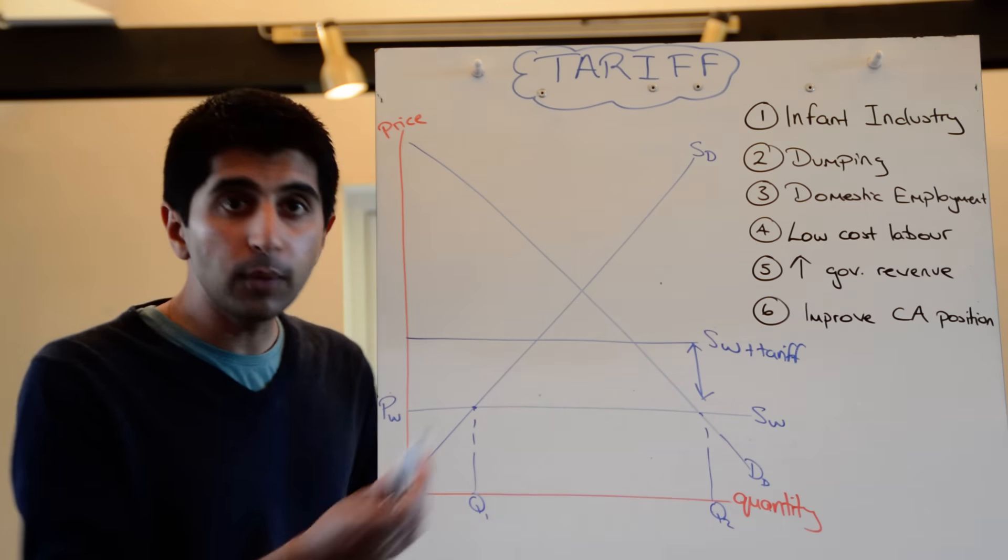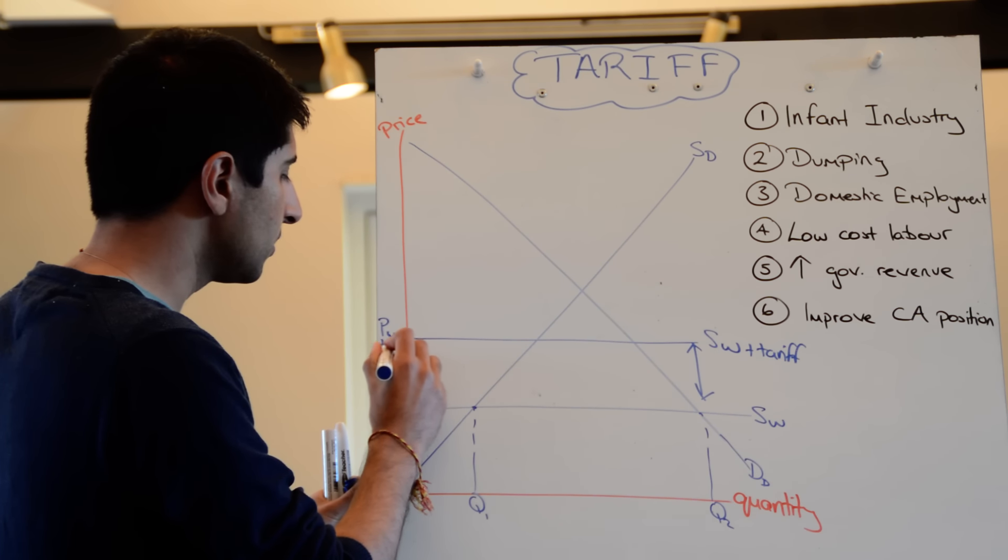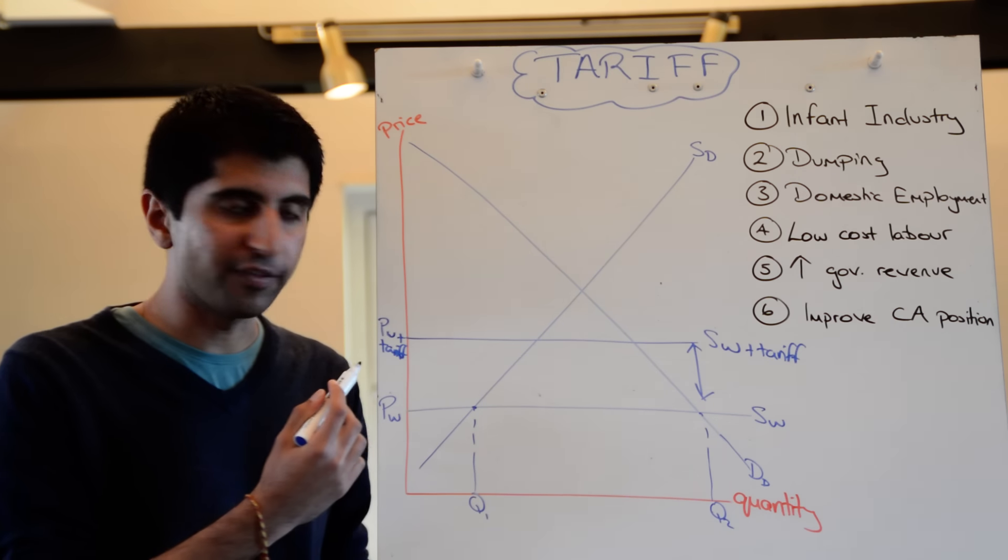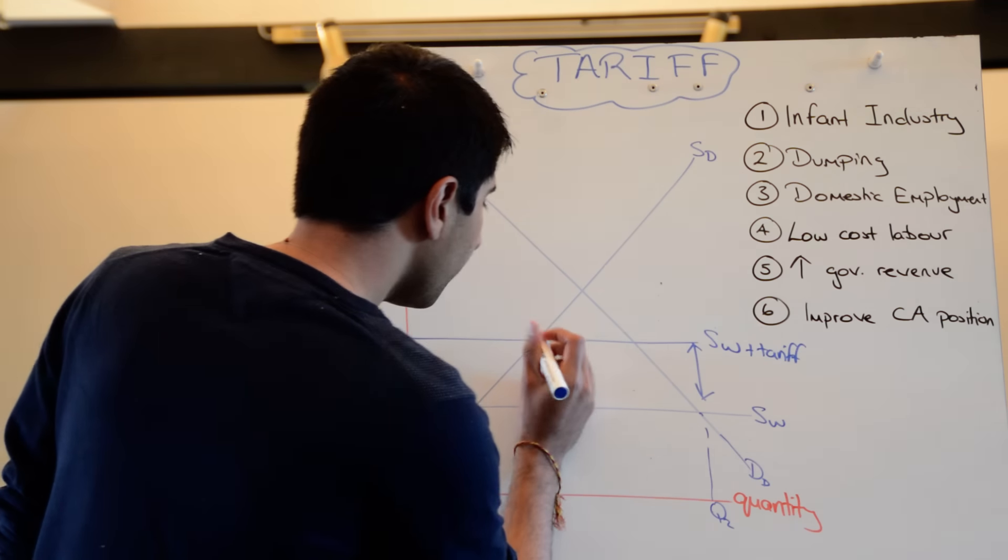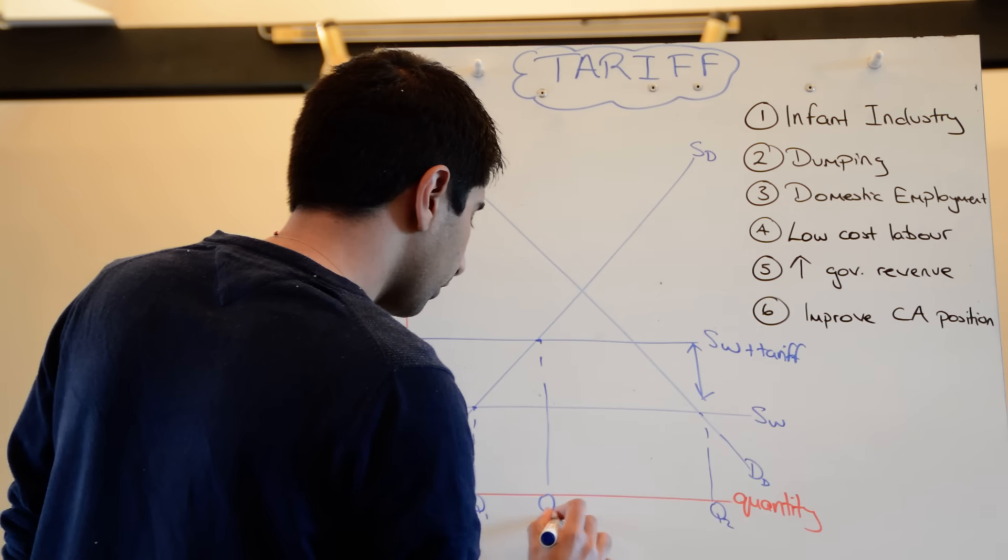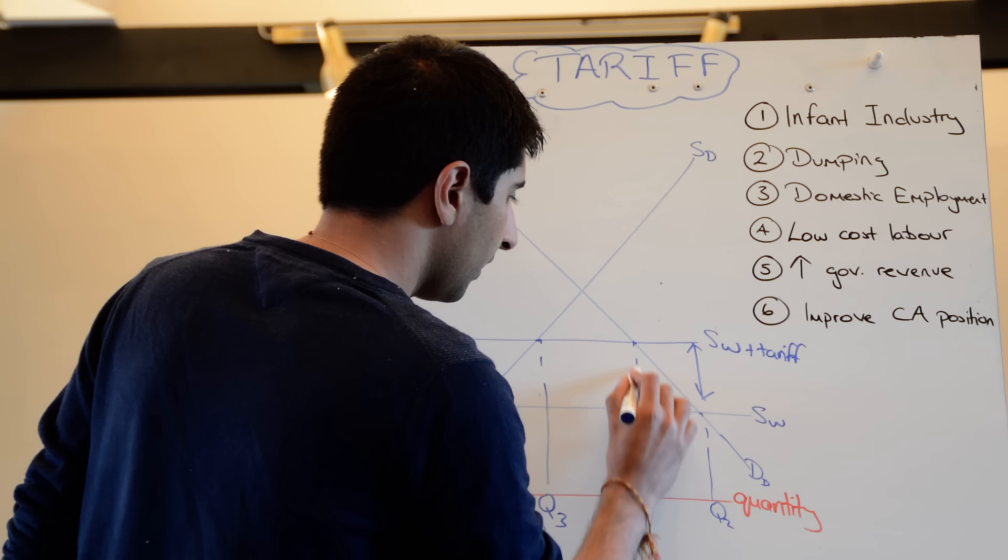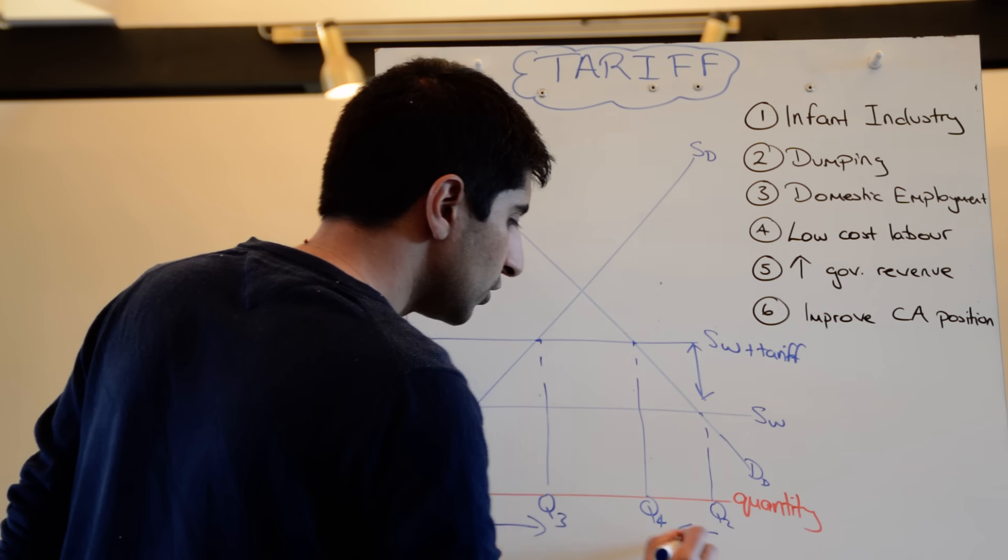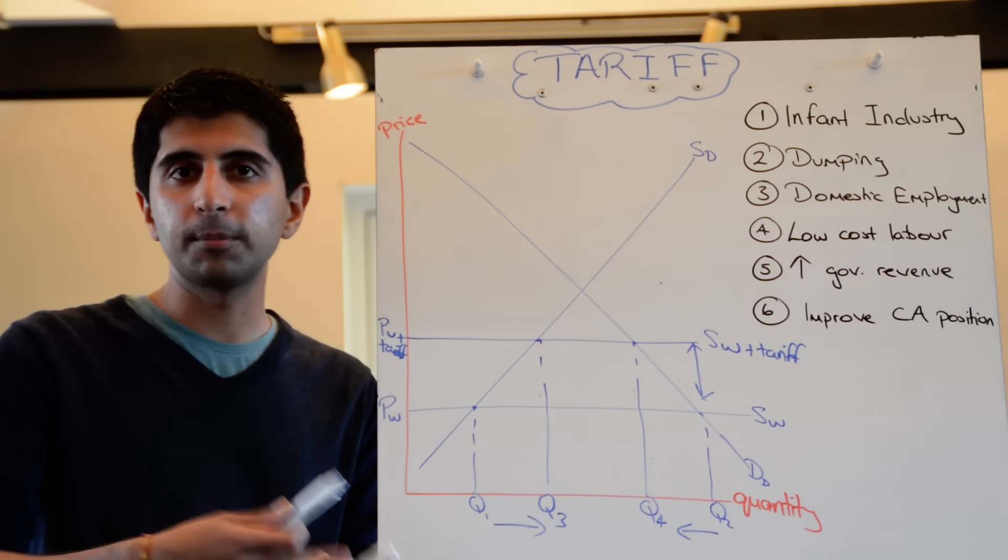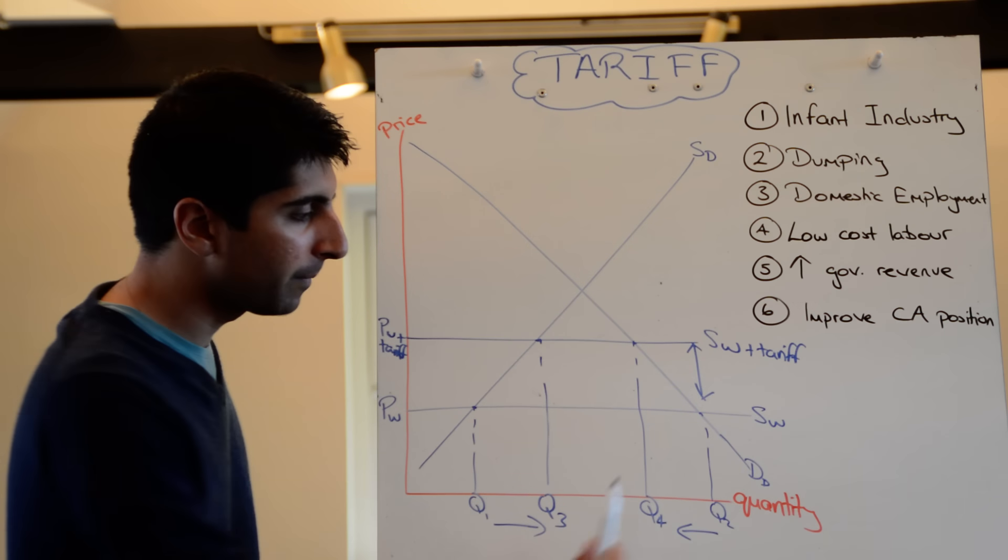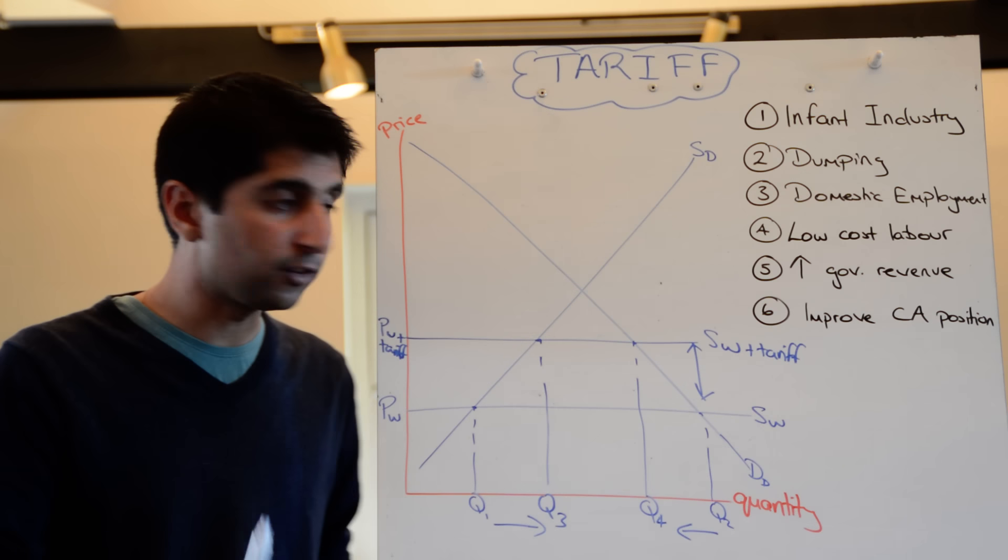What does this do to the market? Well, it raises the price, doesn't it? So price of the market goes up from PW to PW plus the tariff now. We can now work out what's happened to domestic demand and domestic supply. Domestic supply extends from Q1 to Q3. There is an extension there of supply with this higher price. Domestic demand has contracted though from Q2 to Q4 and that makes logical sense as well. Because with a higher price, you would expect that consumers are less willing and able to buy these products now. So demand contracts, we move up the demand curve. Contracting demand, we move up the supply curve, which is an extension of supply.